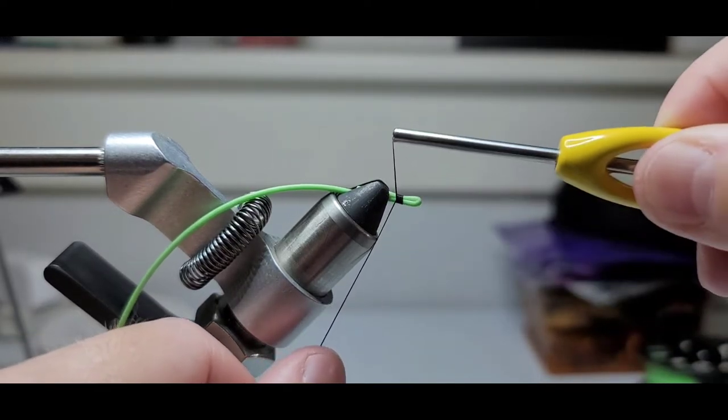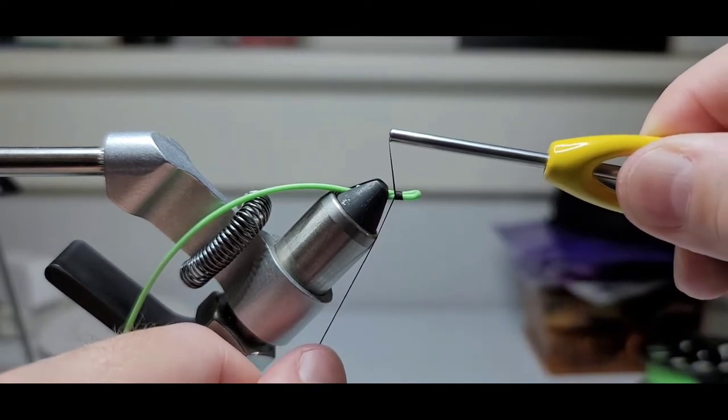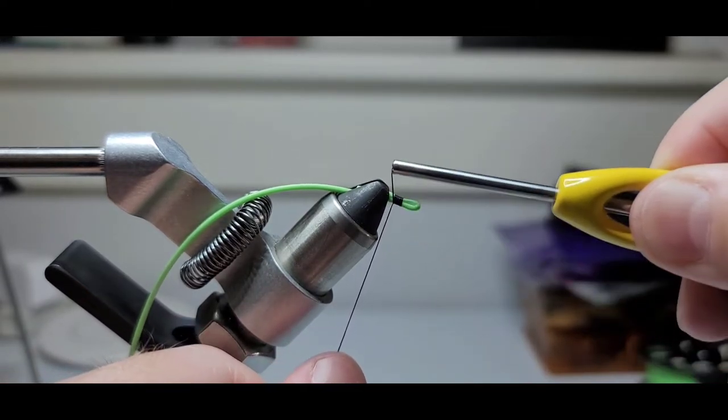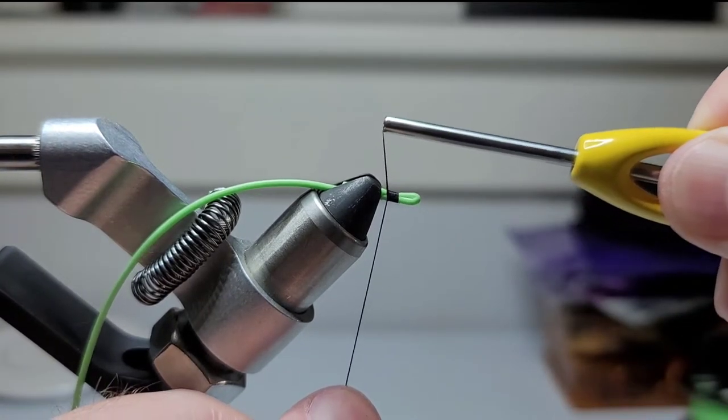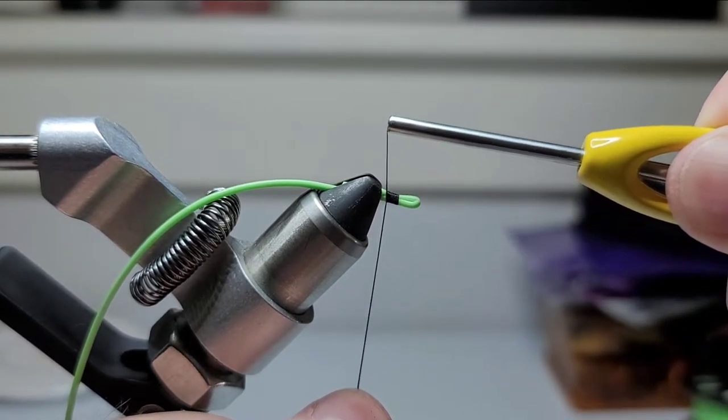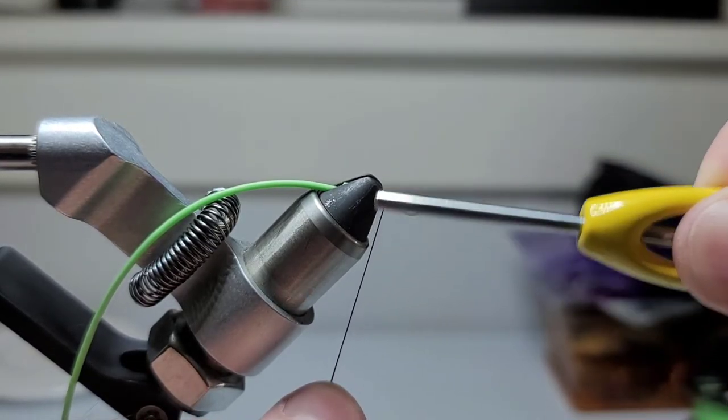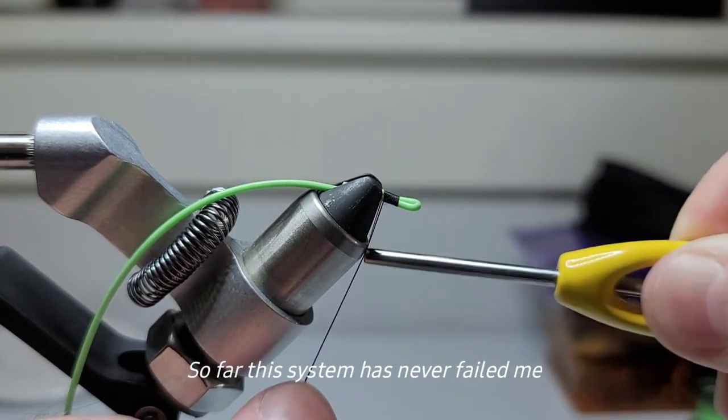The reason I'm using a tag end is because this doesn't have any rigidity like a hook does, so I've got to create something that I can pull against. That's why I'm holding on to it, so that way I can pull it tight. I'm just gonna wrap back to the vise with good tight wraps.